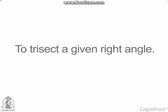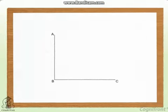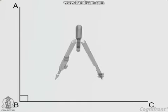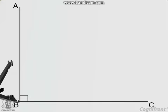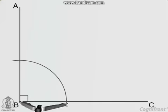To trisect a given right angle, let ABC be the given right angle. With center B and any radius, draw an arc cutting AB at D and BC at E.